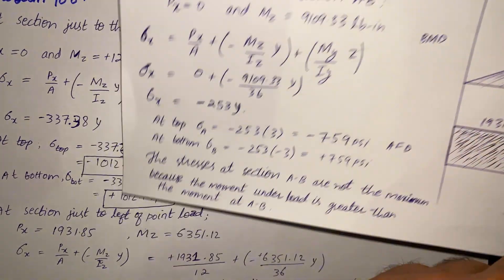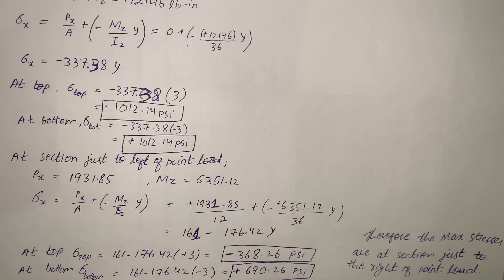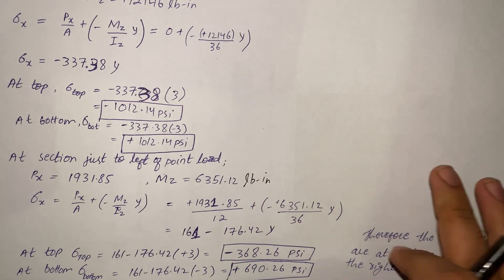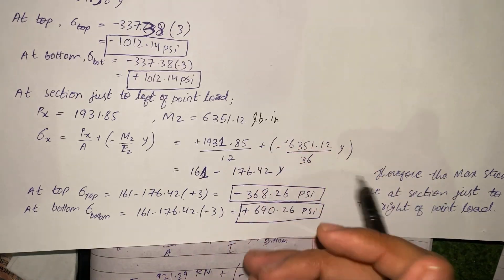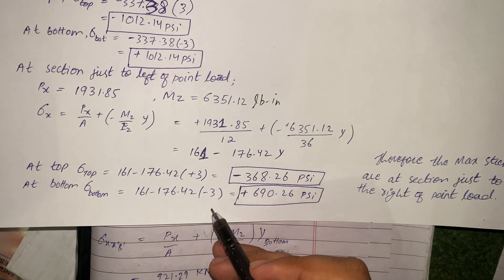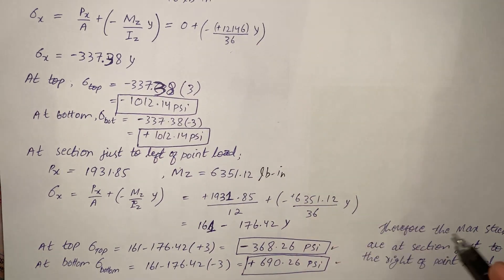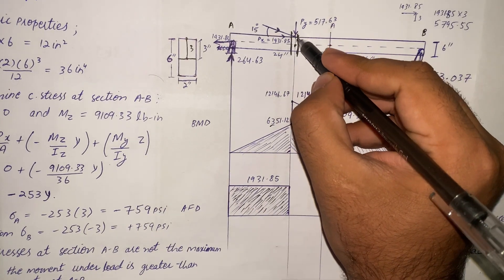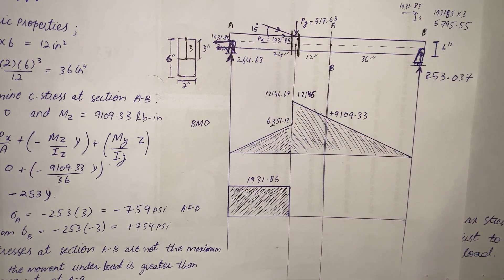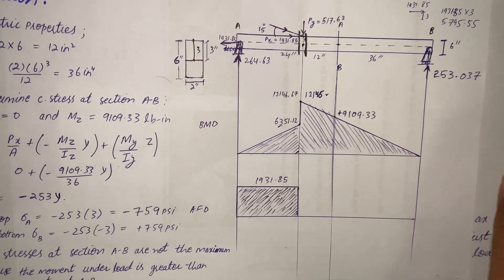Just to the left of the point load, the Px value is acting, and the moment value is 6351.5 pound-inch. Put these values into the combined stress equation and solve. At the top put +3 and at the bottom put −3 to get the stresses. Comparing all values, the maximum stresses are at the section just to the right of the point load, where the bending moment is maximum at 12146, giving a maximum stress of 1012.14 psi.